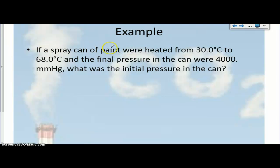An example: if a spray paint can of paint were heated from 30.0 degrees, this would be our T1, to 68 degrees, so this is T2, and the final pressure, so that would be the second pressure, so P2. What's the initial pressure? We're looking for P1.